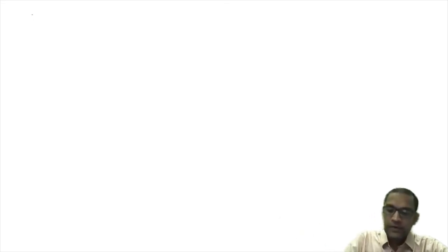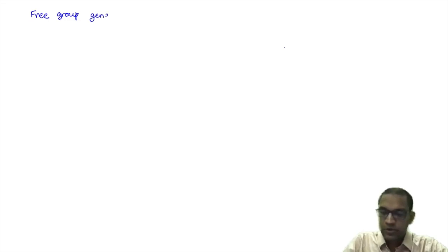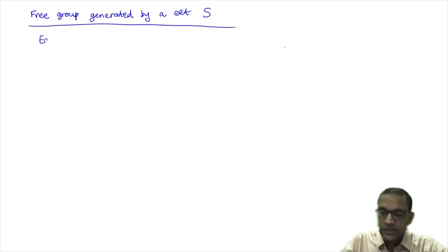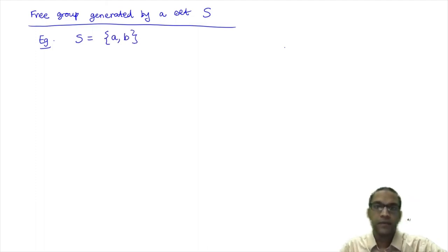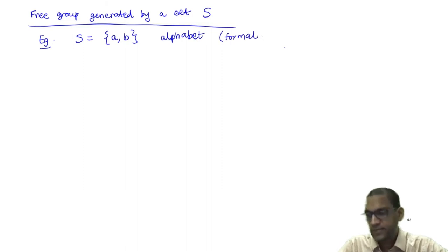Now, what we want to do when we talk about free groups: let me explain the free group on just two generators. In general we have the notion of the free group generated by a set S, but let us illustrate everything for the special case when S has just two elements A and B. Think of A and B as formal symbols — like an alphabet.